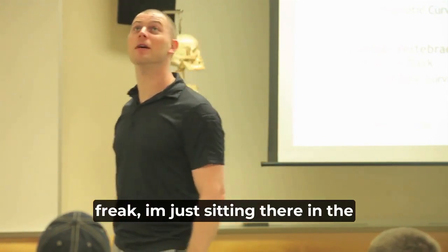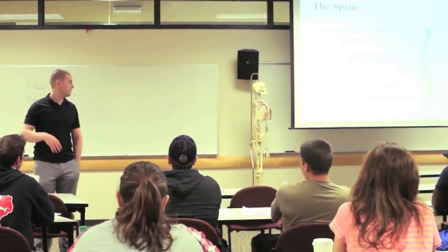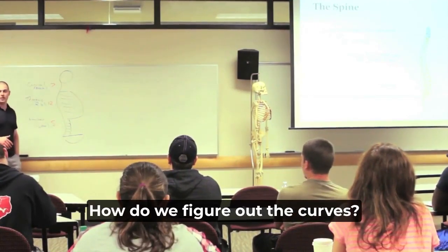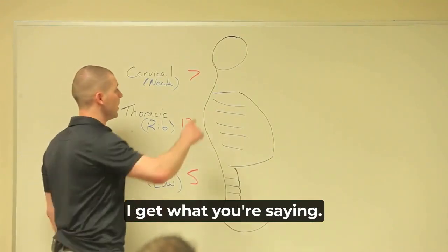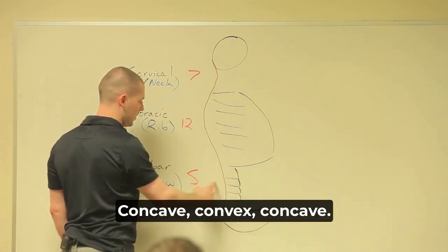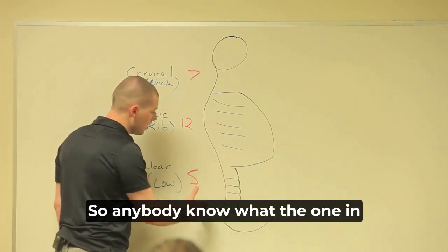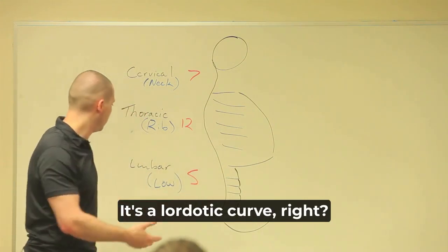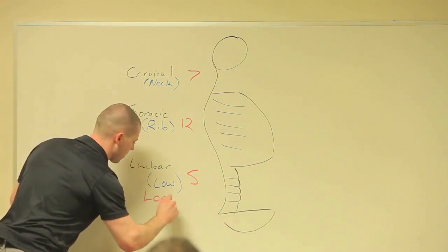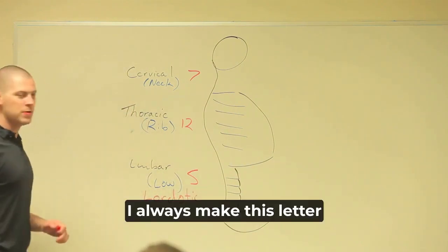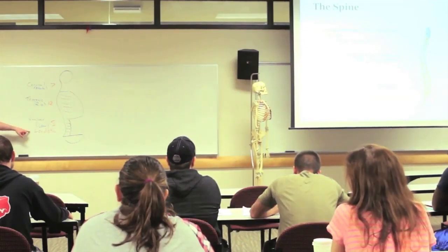The vertebrae have pretty much the same landmarks, with some differences in the attachments and protuberances, but still seven. Twelve ribs — I counted out the ribs. I must have looked like such a freak in the middle of the Chicago Airport. So: seven, twelve, five. Now the other thing you guys have to know is the curves. Right — concave, convex, concave. There's a name for those. The one in the lumbar spine is called a lordotic curve.